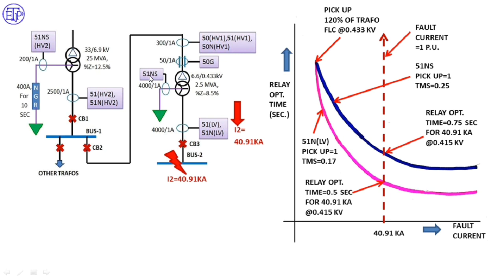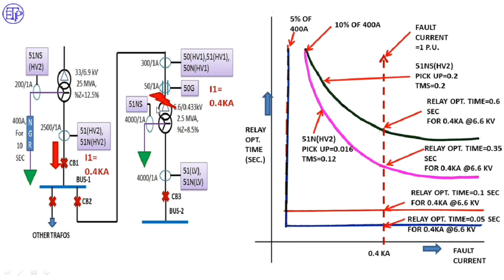Now let's look at the coordination graphs. For 51NLV and 51NS based on 40.91 kA fault current: since both relay pickups are set at 120% of transformer full load current, both curves start at the same point. The relay operating time of 51NLV is 0.5 seconds and 51NS is 0.75 seconds — you can see the time gradation. The coordination ensures that if there is a fault at Bus 2, 51NLV operates first, and if it fails, 51NS operates as backup.